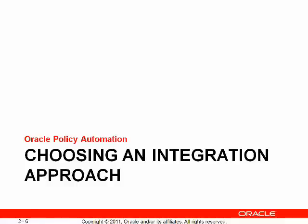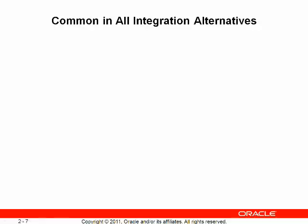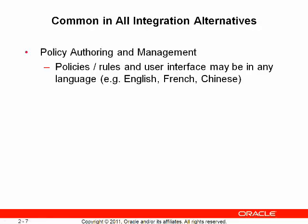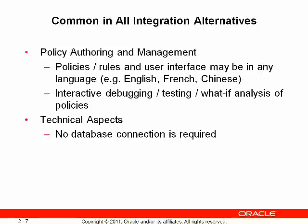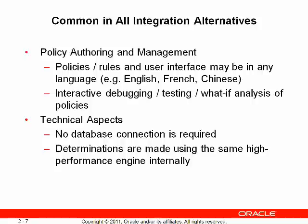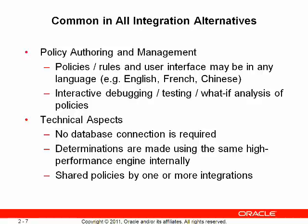There are some factors which will be necessary to consider in determining which integration alternatives are suitable for a given solution. Other factors will have little or no impact on the integration options available when working with Oracle Policy Automation. OPA capabilities that are universal across all integration alternatives include: the policy modeling language need not match the language used for interactive advice — in fact, each policy model can be used with any number of user interface languages. Testing and analysis of policies can be performed interactively, in batch, or as an automated process. Unless using a provided connector, Oracle Policy Automation expects all data to be provided to it and does not require a database connection. Regardless of the integration path selected, all determinations are made by the same high-performance engine. The same policies can be deployed across one or more integration alternatives, achieving consistent determinations across all applications.